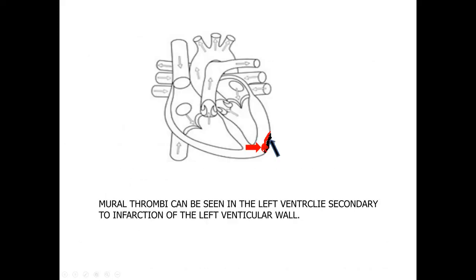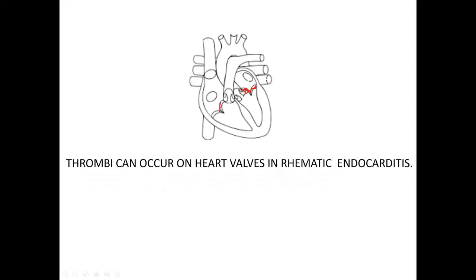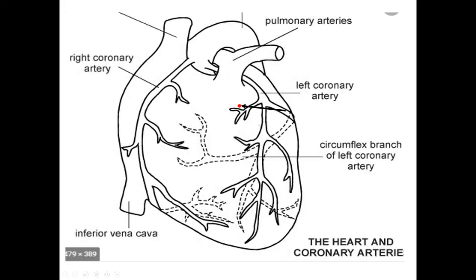In this photograph, you can appreciate mural thrombi seen in the left ventricle, secondary to infarction of the left ventricular wall. In this photograph, you can see thrombi on the heart valves in infective endocarditis; they are large, mixed, friable, and contain microorganisms. Thrombi can also occur on heart valves in rheumatic endocarditis. This photograph shows occlusion of a branch of the coronary artery.